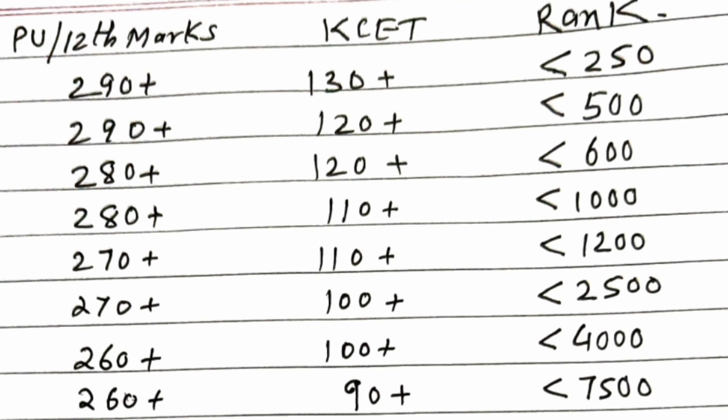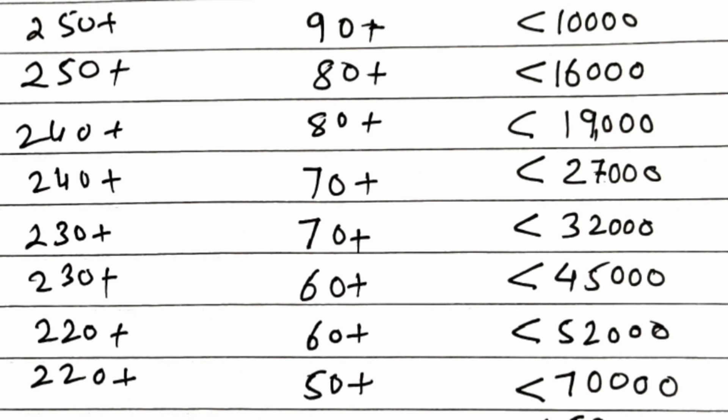And for same 100 marks with 260 plus marks, you can expect 4000 rank and so on. And then rank under 7500 for 90 plus marks and 260 plus in boards. And for the same 90 plus marks with 250 combination, 10,000 ranks. With 80 marks, now the competition will increase fastly. With 80 plus marks and 240 marks, you can get rank under 19,000.